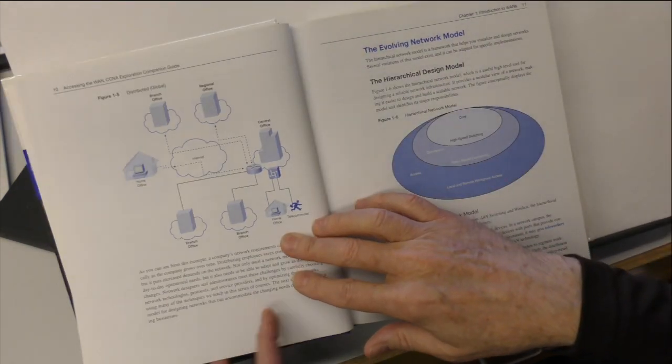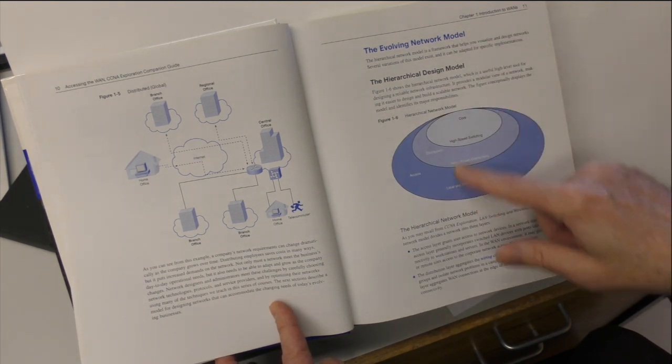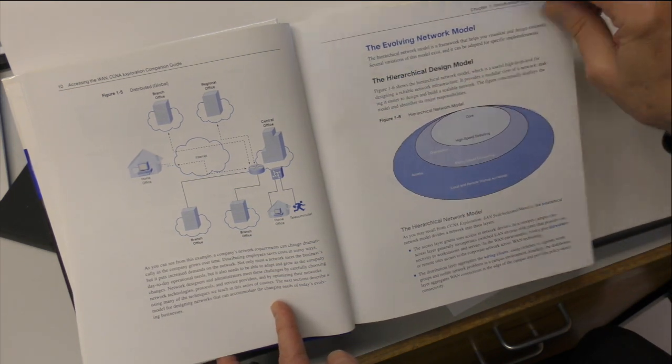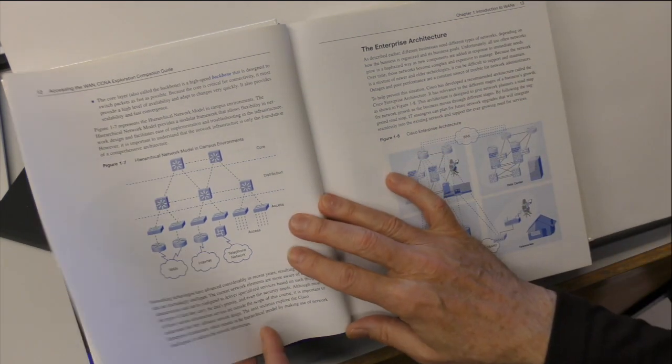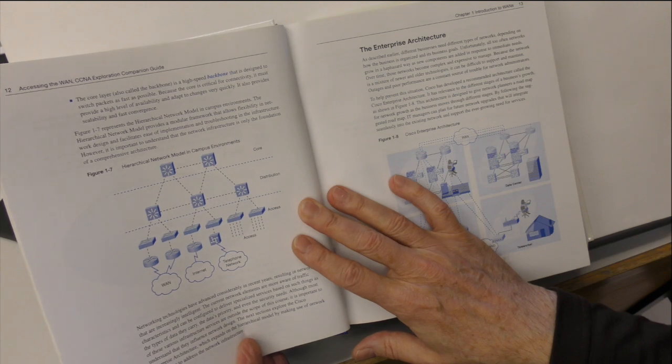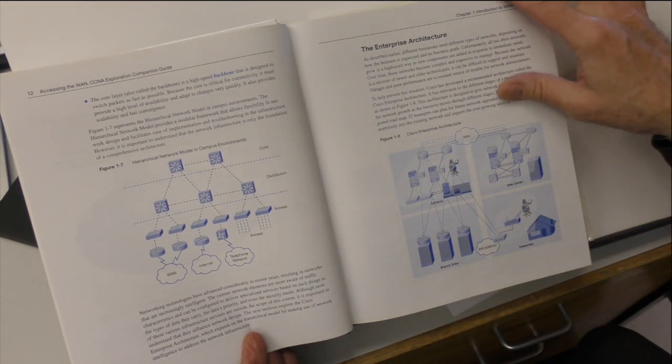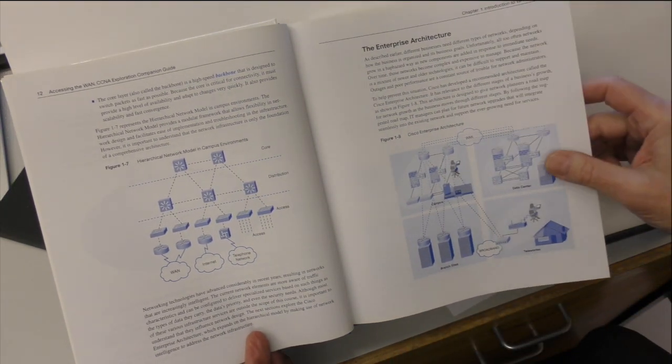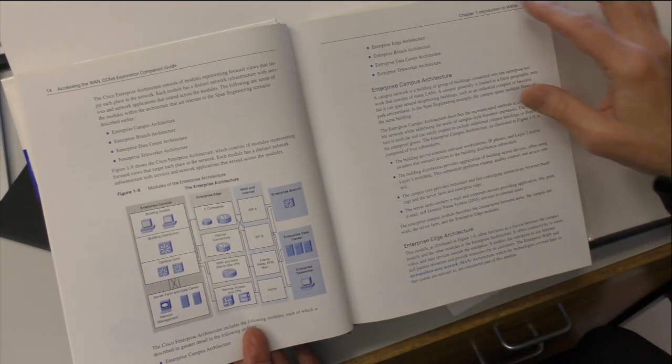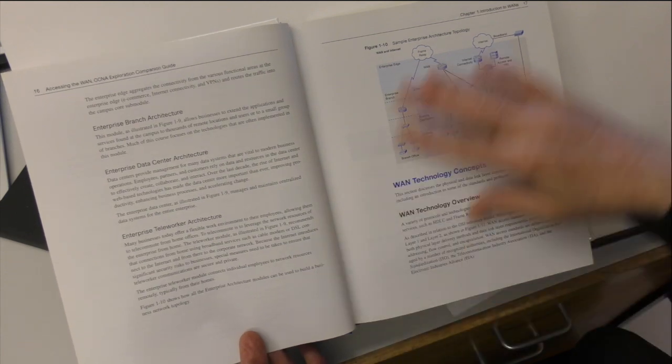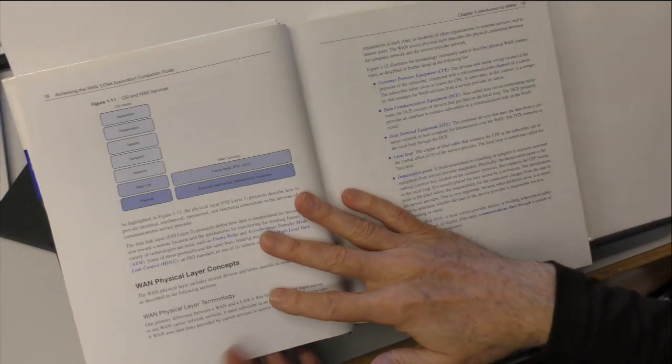Distributed, global, we go on, we keep noticing the diagrams and the hierarchical design model. And at this stage, absolutely no need to be trying to understand it, just allowing yourself to recognise any terms that you're familiar with. Noticing that there are pictures without taking time to pay attention to them at this stage. And just getting an overview of the chapter and what's in there.